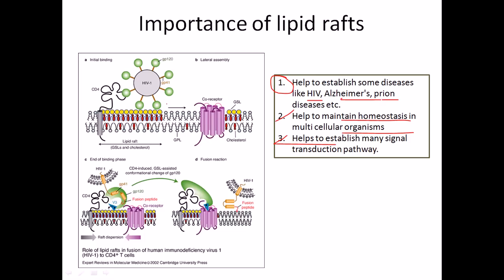Here is an example of how lipid rafts help to establish HIV disease. The HIV virus has components gp120 and gp41. The gp41 is a leg-like structure and gp120 is the attachment region. At the starting point of infection, HIV-1 comes in and binds with the CD4 receptor present on immune cells using the gp120 link. However, this attachment is a weak attachment and can only be stabilized after incorporation of a domain within the gp120 region called the V3 domain.